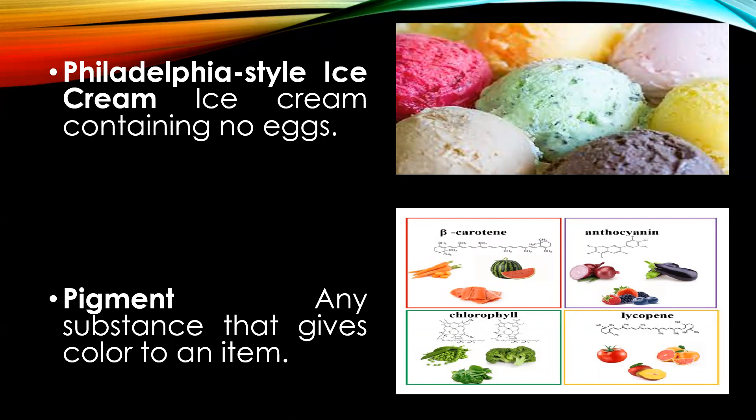Carotenoids are present in orange and yellow fruits and vegetables. Similarly, the purple colour pigment anthocyanin would be found in brinjals and so on and so forth.